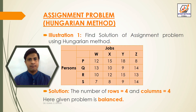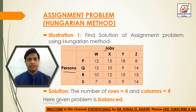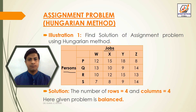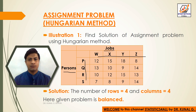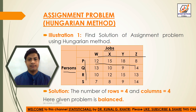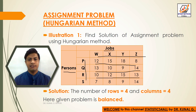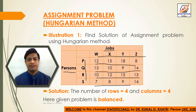Assignment problem by Hungarian method — Illustration number one. Find the solution of the assignment problem using the Hungarian method. Persons are given in rows and jobs are given in columns. Persons are P, Q, R, S and jobs are W, X, Y, Z. The cost matrix values are: 12, 15, 18, 8; 13, 10, 9, 14; 10, 12, 15, 13; and 7, 8, 9, 14.